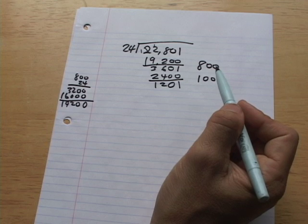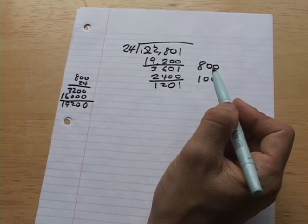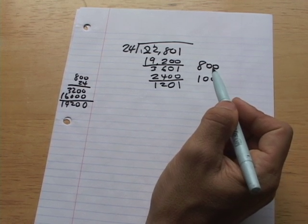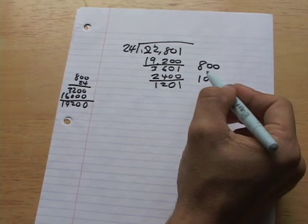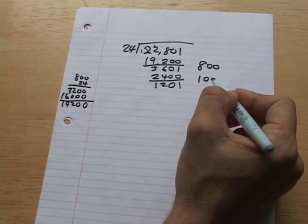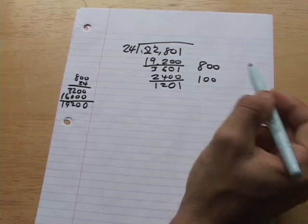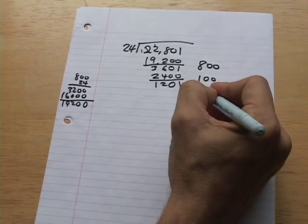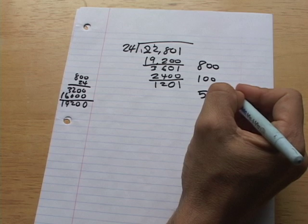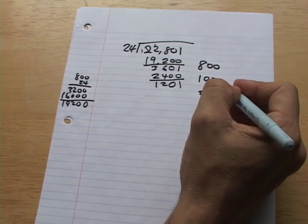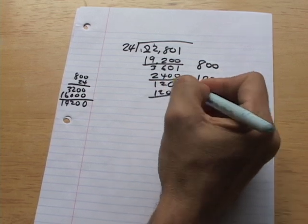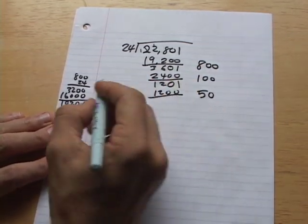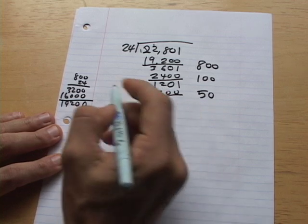So now you're going to go, okay, 24 into 1201. Well, 24 times 100, I'm going to guess is 24 times 100 is 2400. So half of that, let's see, 24 times 50. And let's see, 24 times 50. Well, that's going to be half of that. So that's going to be 1200. And for those of you who didn't see what I did, I basically just took half of 2400. And of course, that's going to be 1200.